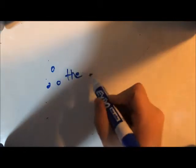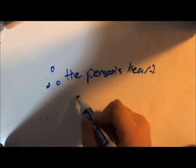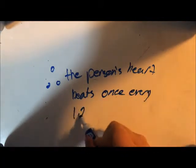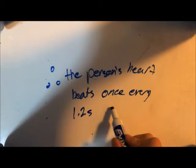Based on the context of this question, the period represents the time interval between each heartbeat. This means an individual's heartbeat beats once every 1.2 seconds.